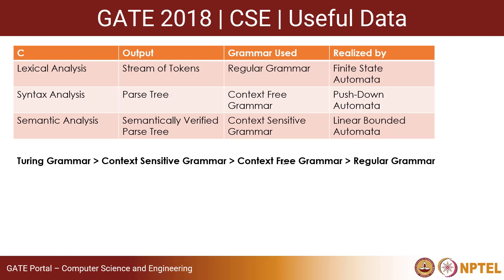There is a concept called the power of a grammar. Regular grammar can represent regular languages. Context free grammars can generate context free languages. Context sensitive grammar can represent context sensitive languages. Turing grammar can represent recursively enumerable languages. Whatever you can generate using regular grammar, you can also do using context free grammar. Whatever context free grammar can generate, context sensitive grammar can also generate. So Turing grammar is the most powerful — it can represent any grammar: context sensitive, context free, or regular. Context sensitive can represent context free and regular. Context free grammar can represent regular grammar as well.